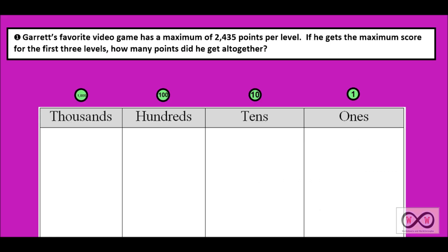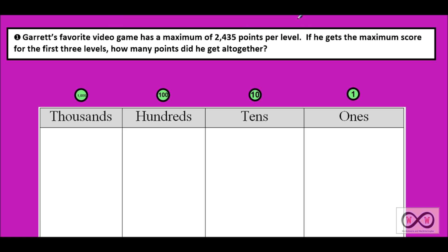Garrett's favorite video game has a maximum of 2,435 points per level. If he gets the maximum score for the first three levels, how many points did he get altogether? Let's take a look through this a second time, trying to tease out our math clues sentence by sentence as we take a closer read of the problem.